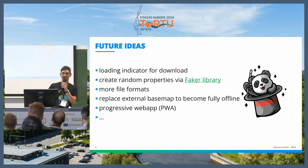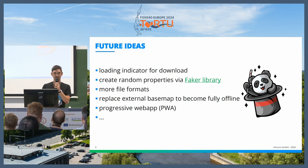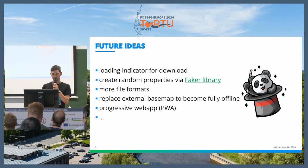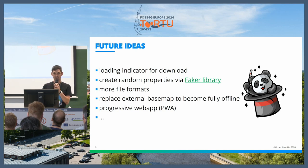I would like to add a loading indicator for downloading. Currently I'm only creating 100 points, so I'd like to make that number editable — whether you want 10,000 or just 10. I currently don't create any attributes, but I discovered a JavaScript library called Faker that creates fake data about anything you can imagine, like customer names or email addresses, and I'd like to incorporate that. I also want to add more file formats, and maybe make it a progressive web app with a base map stored offline so you don't need too many connections to any server.